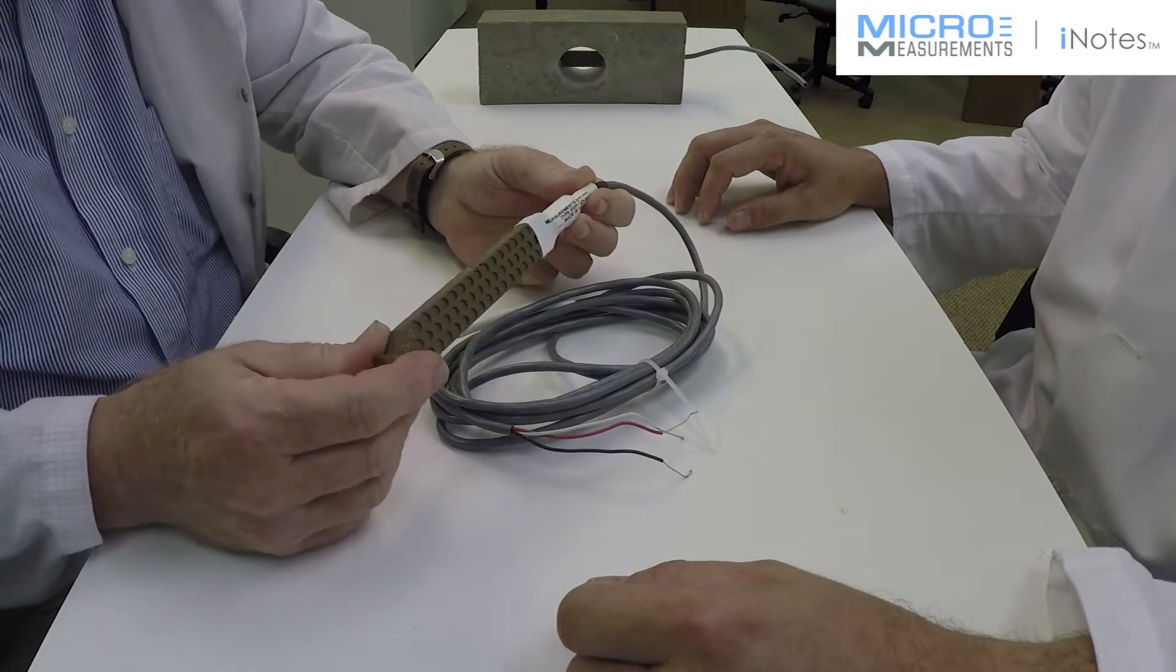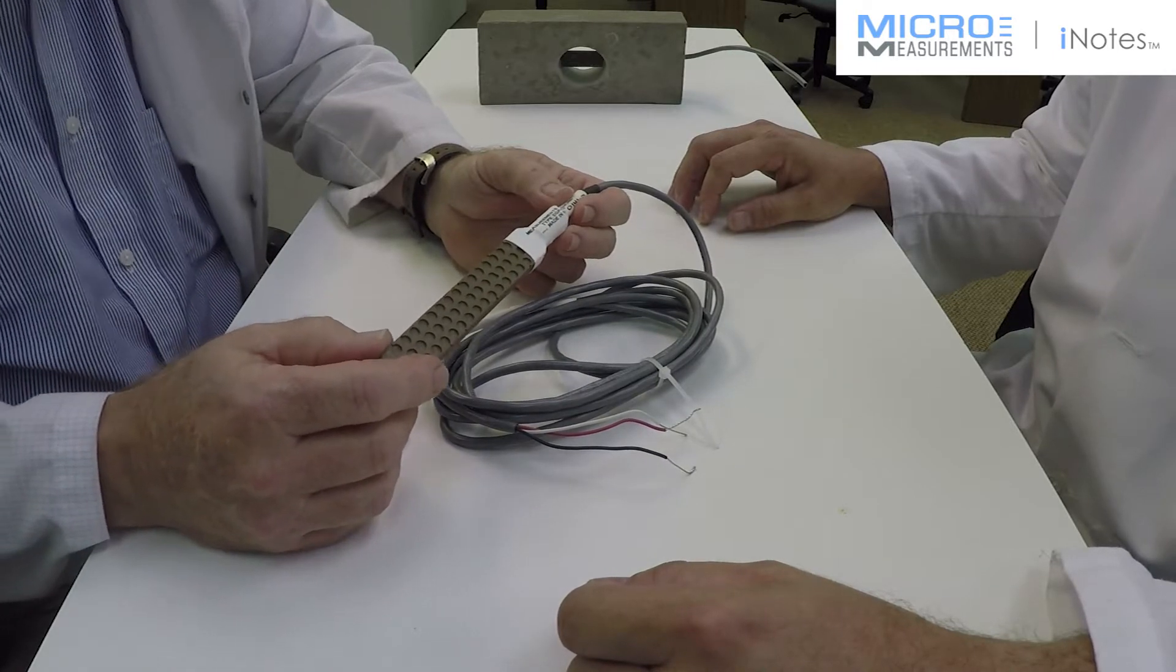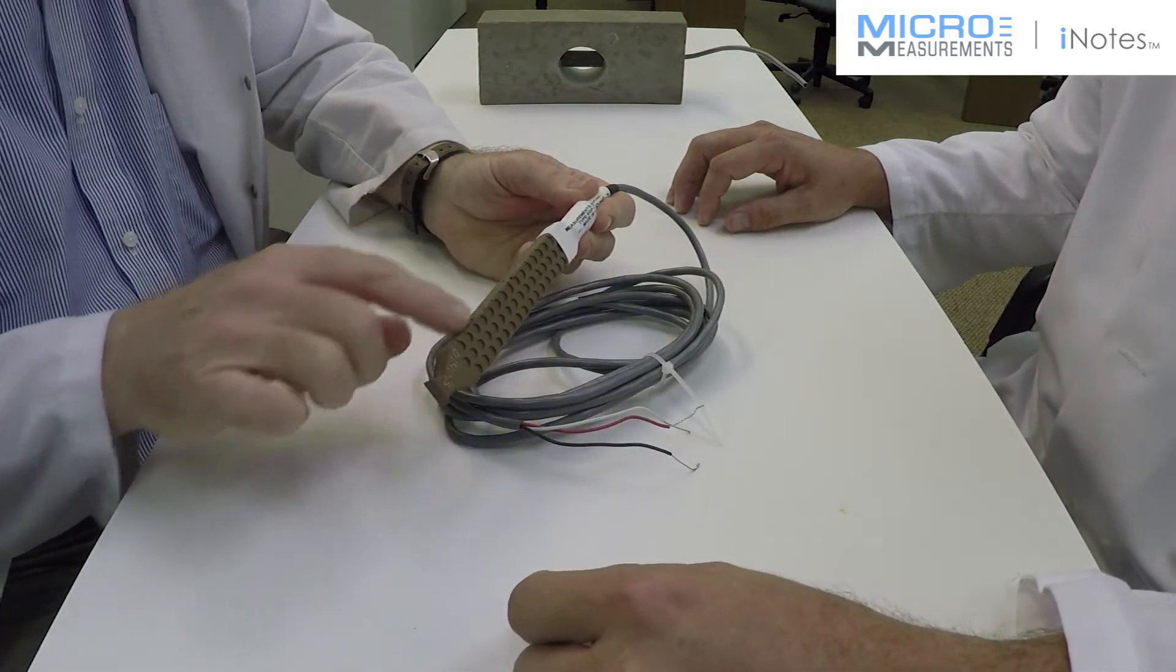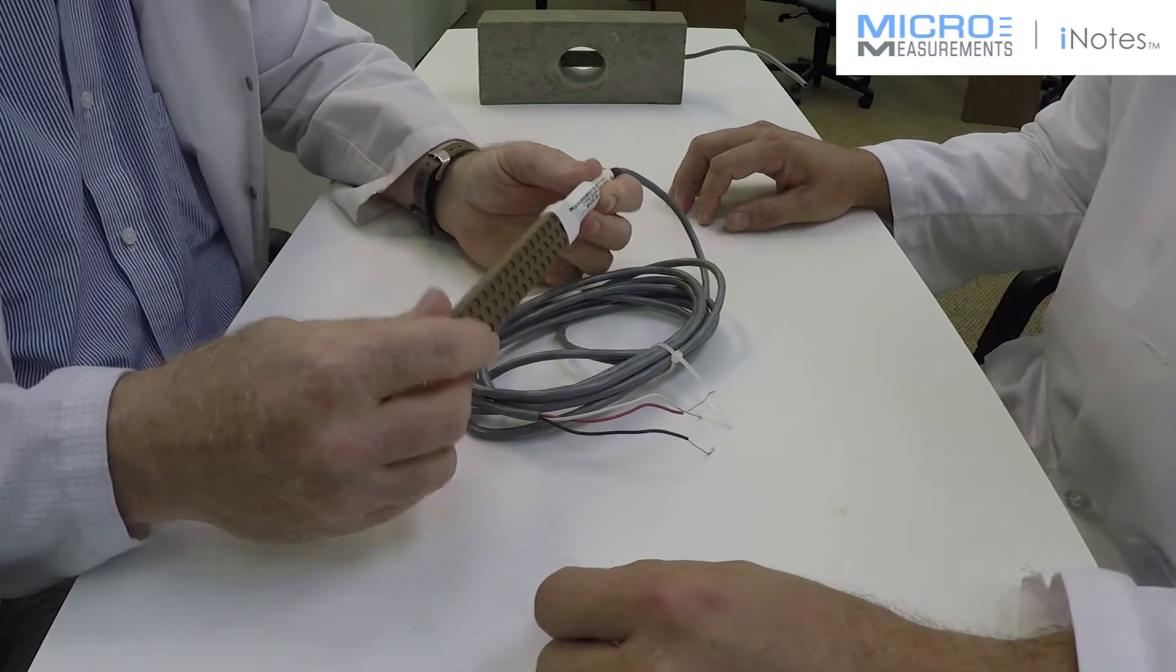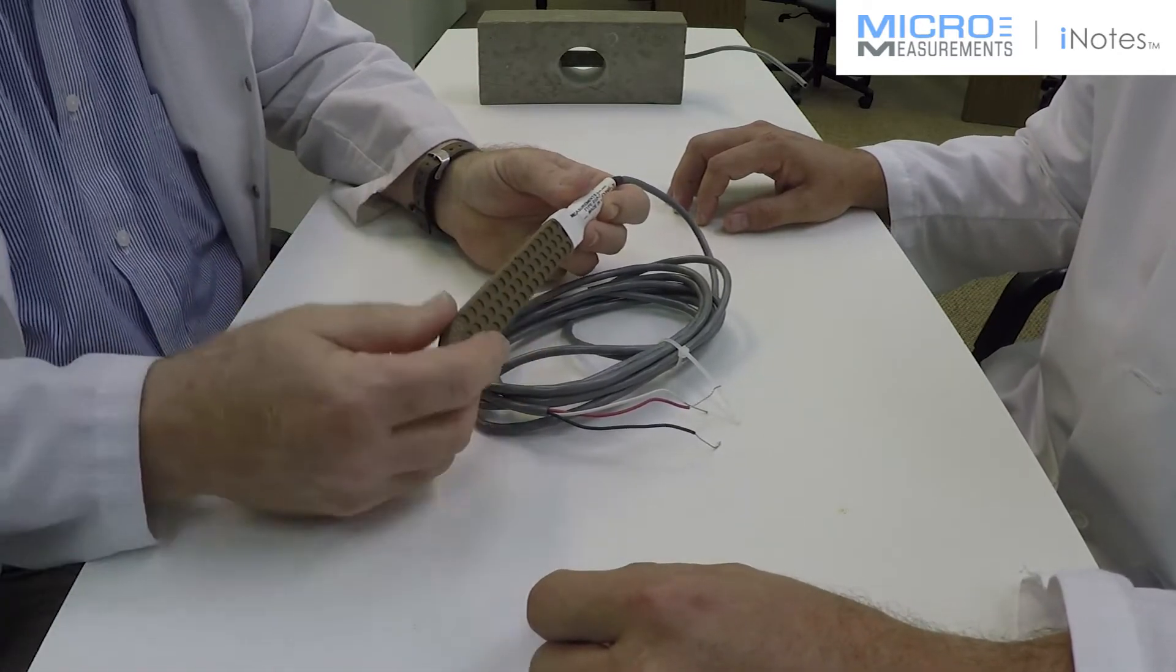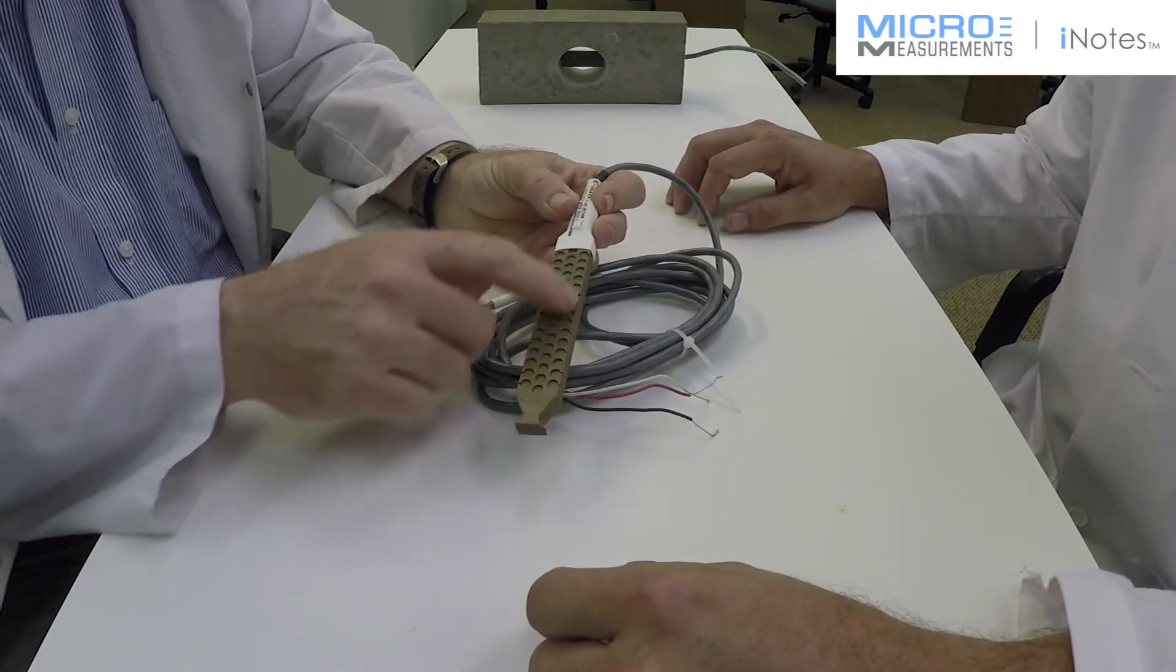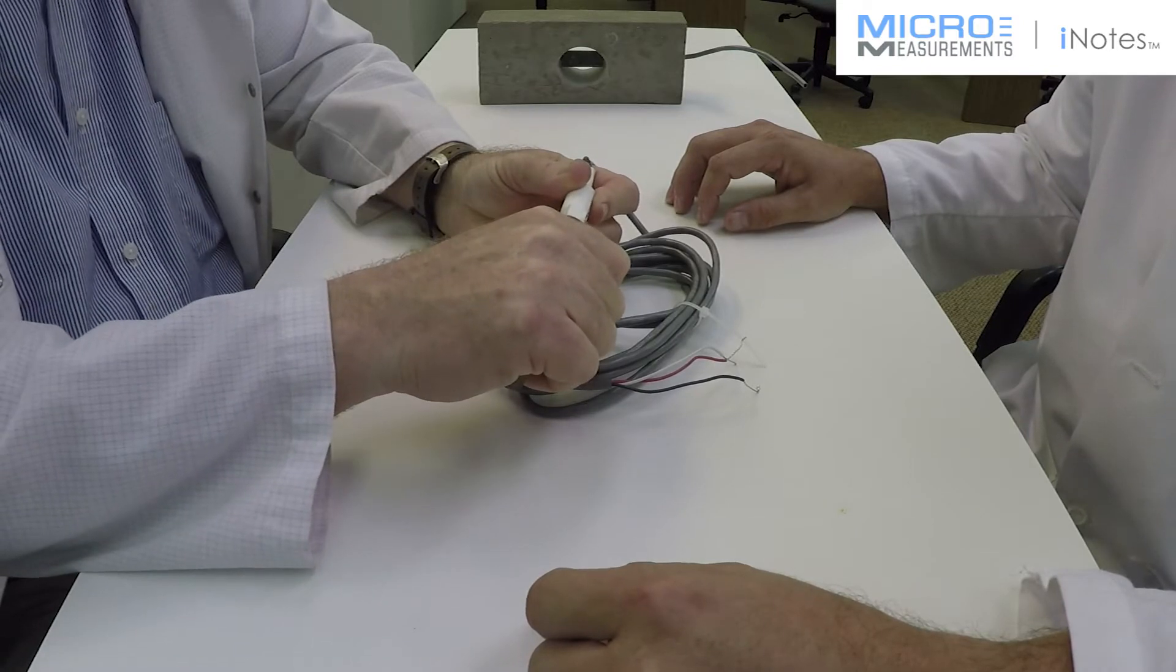This gauge is designed so that it mimics 3,500 psi concrete. The material that it's made of, when you embed it in the concrete, it doesn't change the characteristics. If you've got a certain amount of stress going through the concrete, this will equally match that. It's got a surface with little divots in it that allows it to grab hold of the concrete once it's cured.